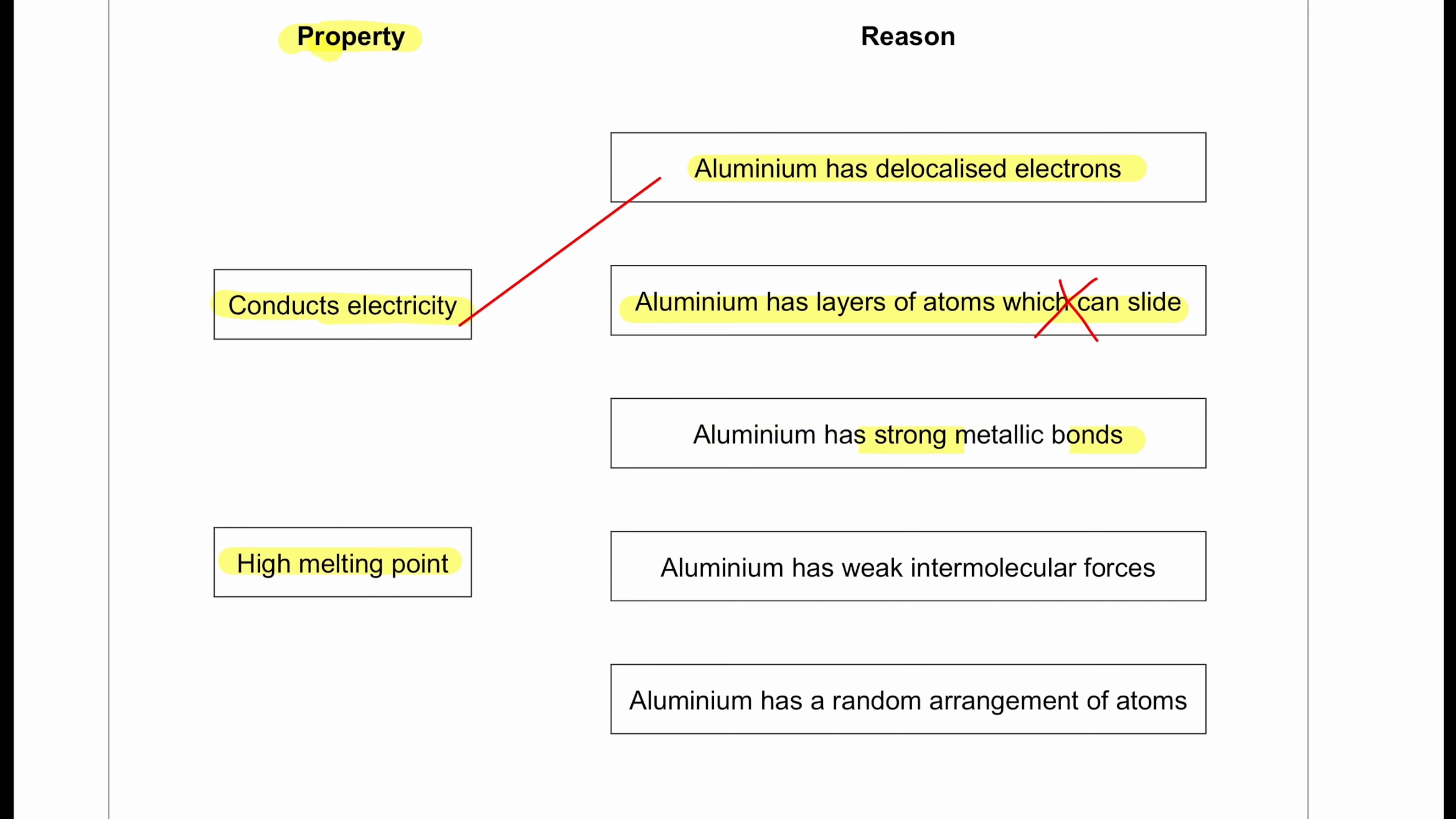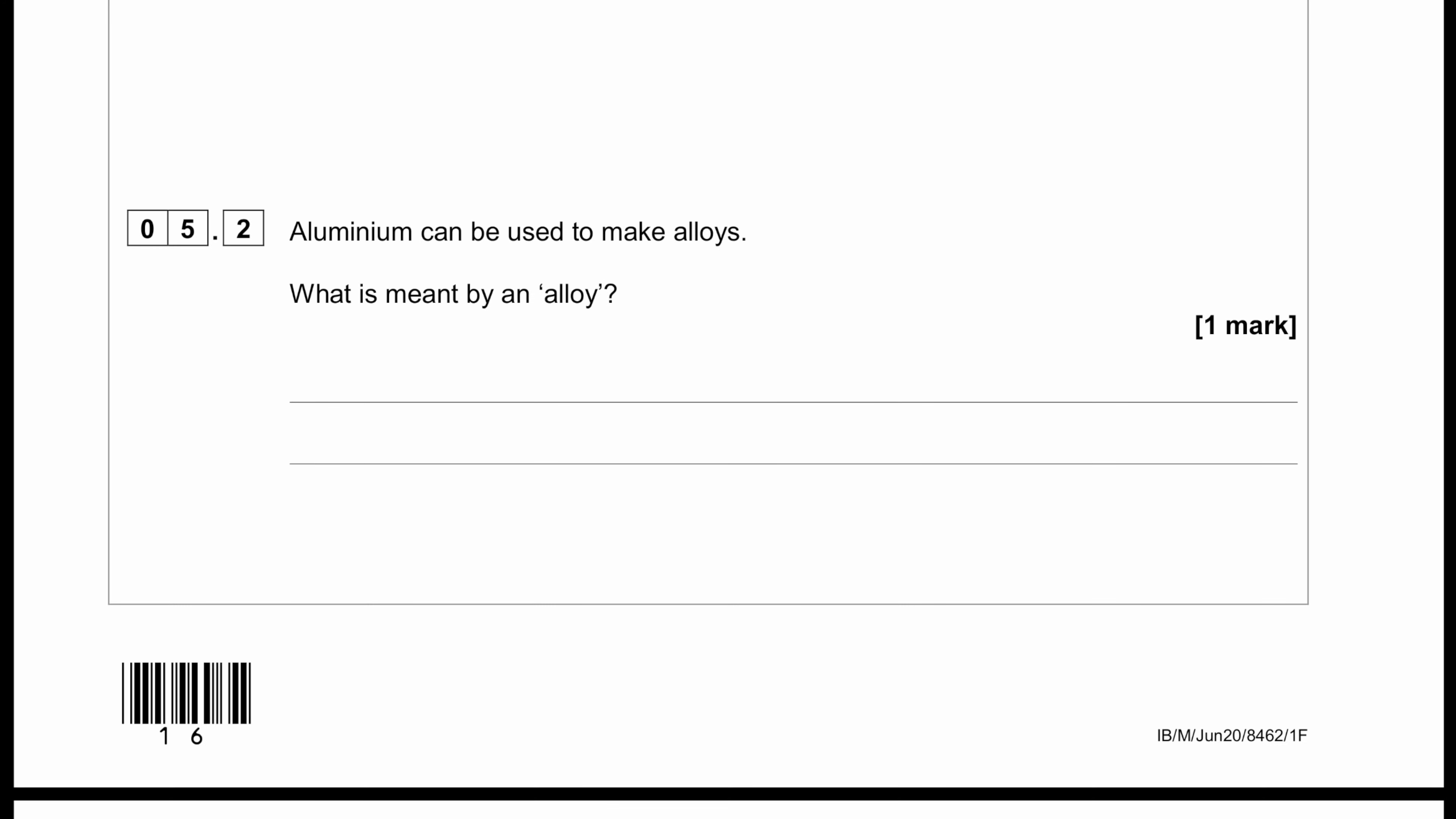Next, high melting point. Aluminium has layers of atoms which can slide, which makes it malleable, so not a reason for high melting point. Aluminium has strong metallic bonds. Strong metallic bonds are associated with high melting point because we are going to need a lot of energy to overcome that, a high amount of energy needed to break the bonds between the metal to melt it.